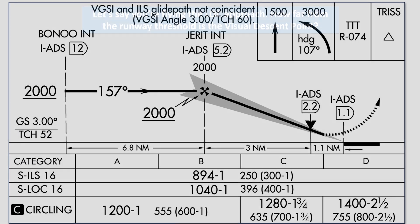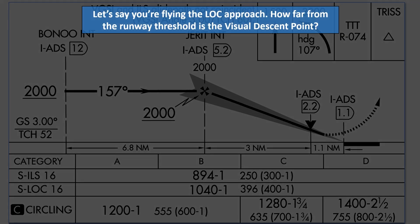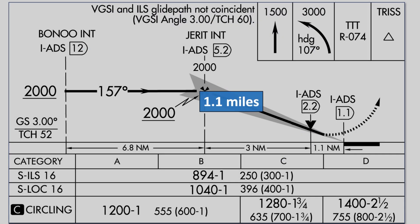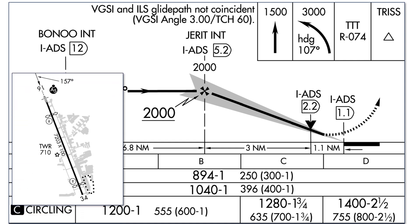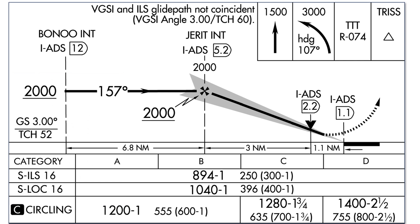Last question: Let's say you're flying the LOC approach. How far from the runway threshold is the visual descent point? 2.2 miles, 1.1 miles, 5.2 miles, or at the runway threshold? This is tricky — it's 1.1 miles. However, it's 2.2 DME from the localizer. Why the difference? Because the localizer antenna is situated at the far end — the departure end of runway 16. The runway is over 7,000 feet long, about 1.1 nautical miles. So the beginning of the runway is 1.1 miles from the localizer, and it's another 1.1 miles to the visual descent point, 2.2 DME total.